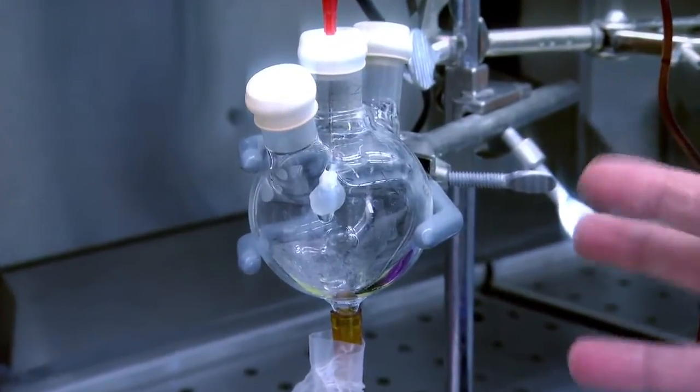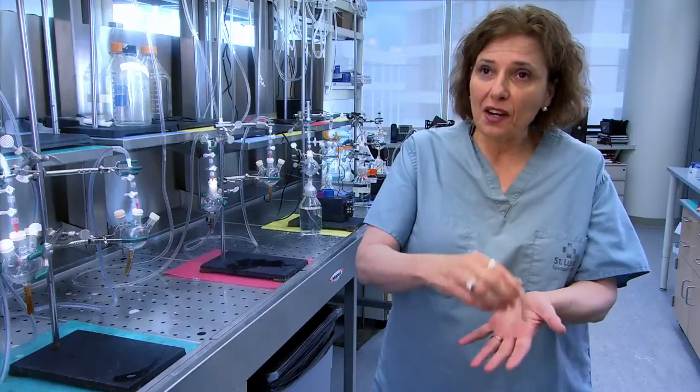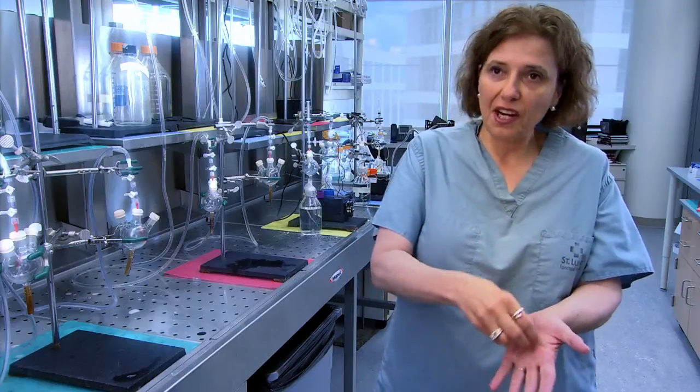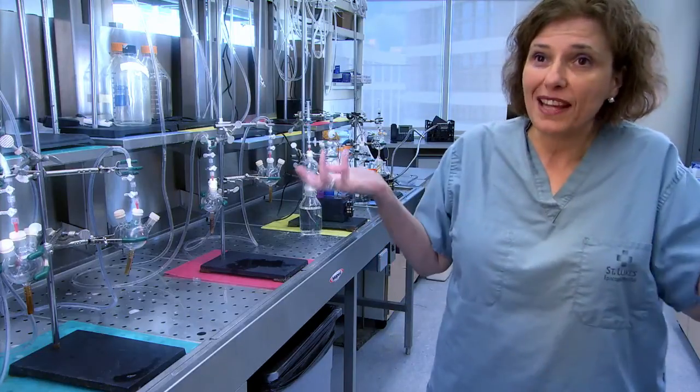If we sliced the heart in half, the valves would be there. The blood vessels would be there. All the rough inside lining of the heart would be there, but without cells.